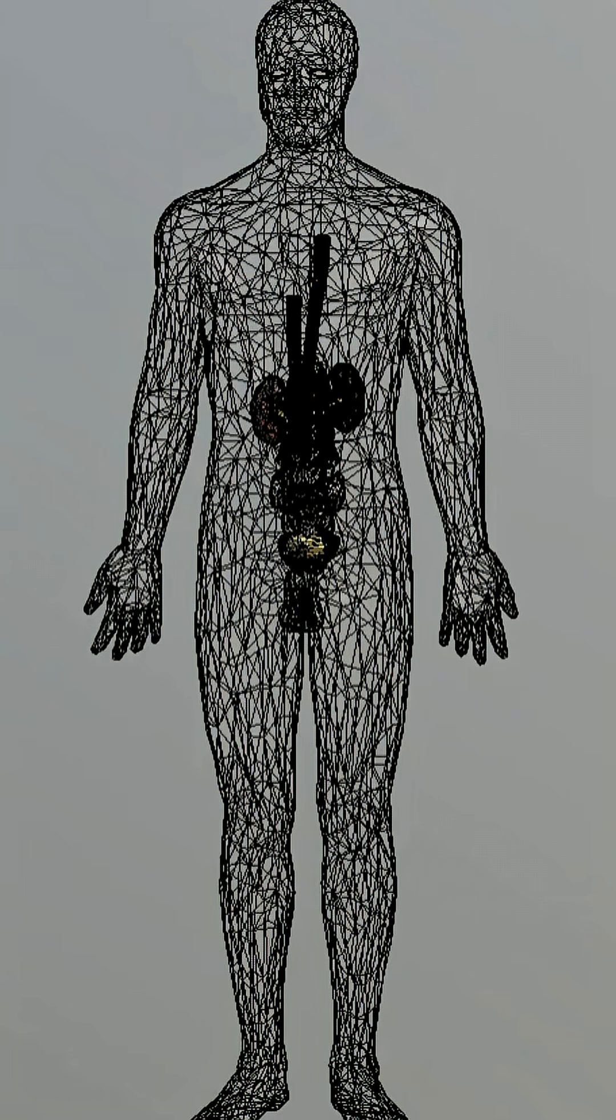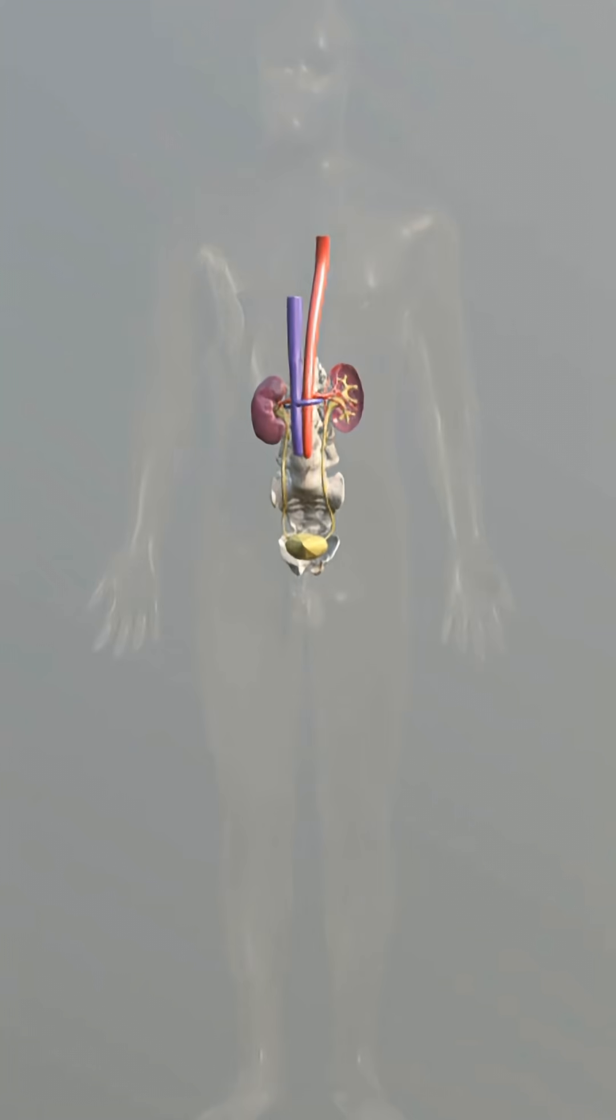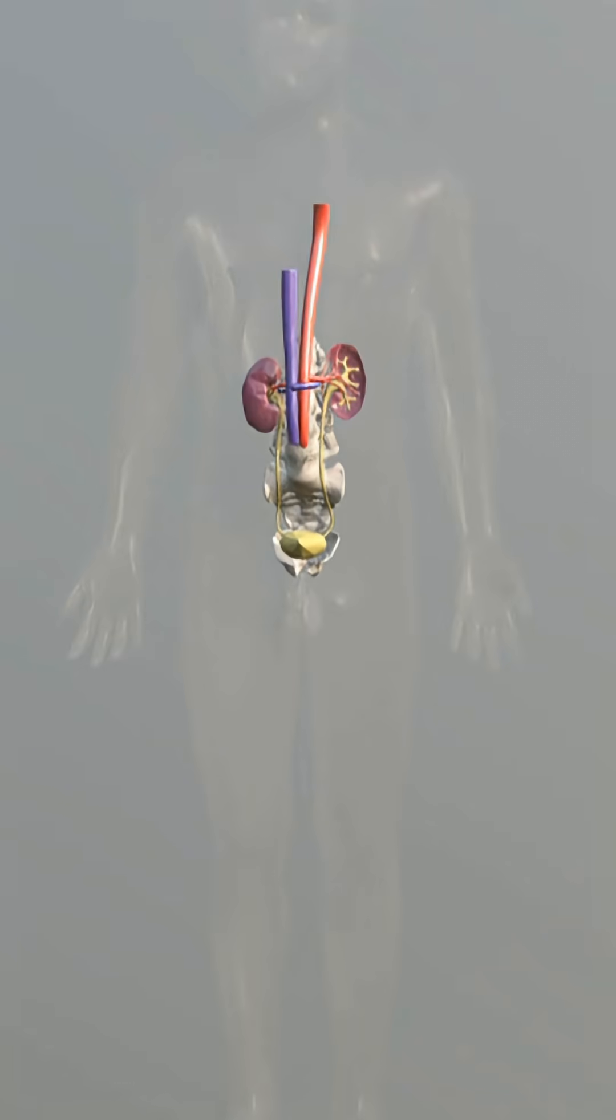Here we see the full urinary tract. The kidneys filter blood, creating urine which travels down these ureters and into the bladder.